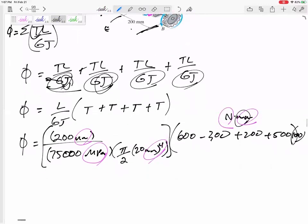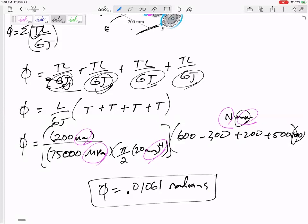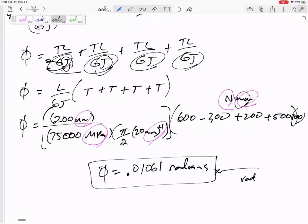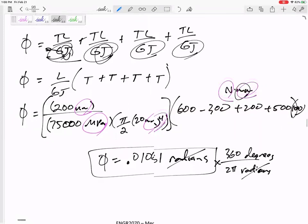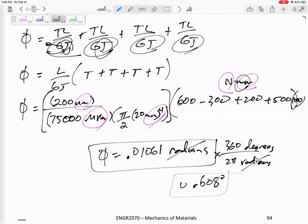So do that math and get that the angle of twist is 0.01061 radians. You can leave it like that. If I ask for it in degrees, I do expect you to be able to convert radians to degrees. If you want to convert radians, I do 360 as 2 pi. Most people do 180 over pi. I just like to think a whole revolution, a whole 360 is equal to 2 pi radians. 0.608 degrees. So you see that those are different numbers, but the same thing. 0.01061 radians or 0.608 degrees.